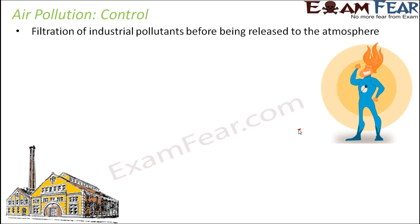First of all, filtration of industrial pollutants before being released to the atmosphere. The emissions from industries and factories are a major cause of polluting the air. So therefore, even before the pollutants or harmful substances get released from the industries, we can filtrate them so that the impurities are removed by means of some fine physical barrier.